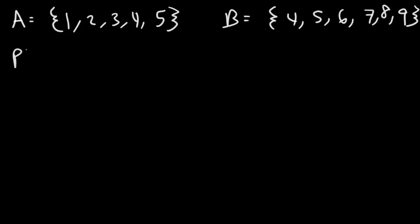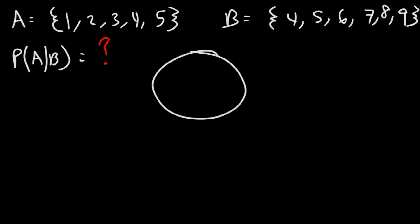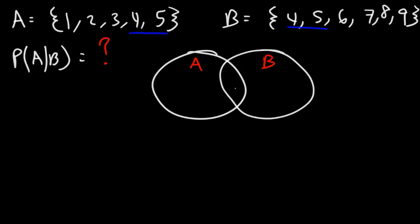What is the probability of A given B? Let's use Bayes' Theorem to calculate this. Now I'm going to create a Venn diagram. The first circle is for event A, the second one is for B. A and B have two numbers in common, 4 and 5 — that's the intersection of A and B. A also has the numbers 1, 2, and 3. B has the numbers 6, 7, 8, and 9.